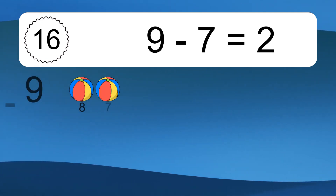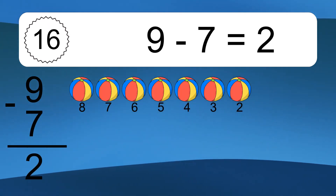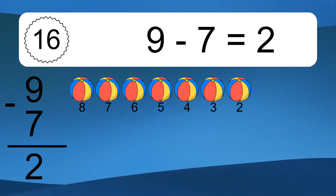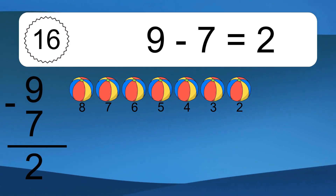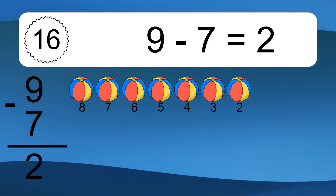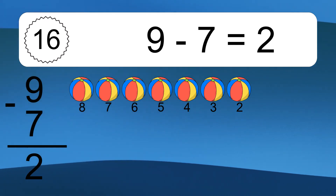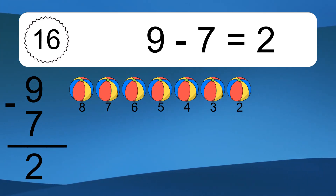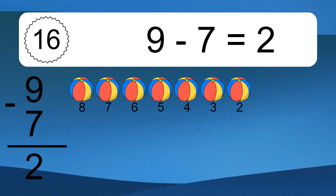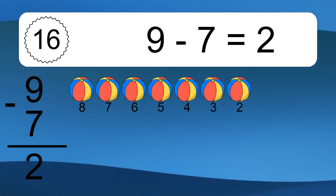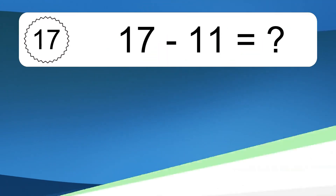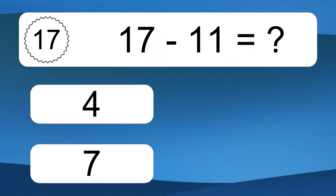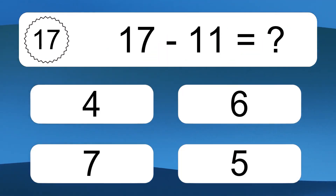9 minus 7 equals what? 9 minus 7 equals 2. Let's count it: 8, 7, 6, 5, 4, 3, 2. 17 minus 11 equals what?